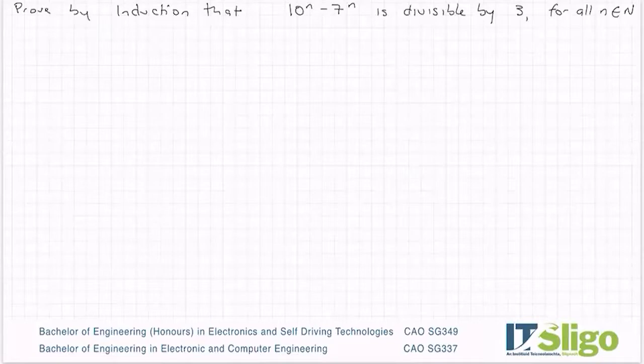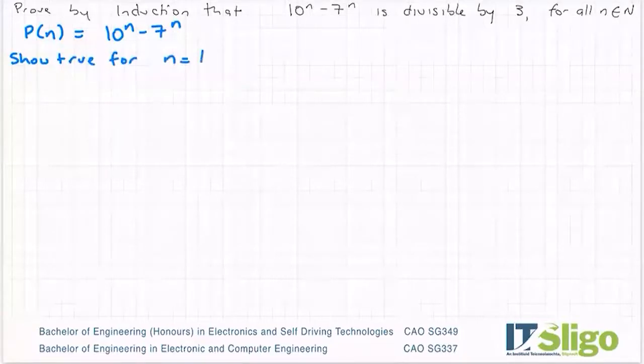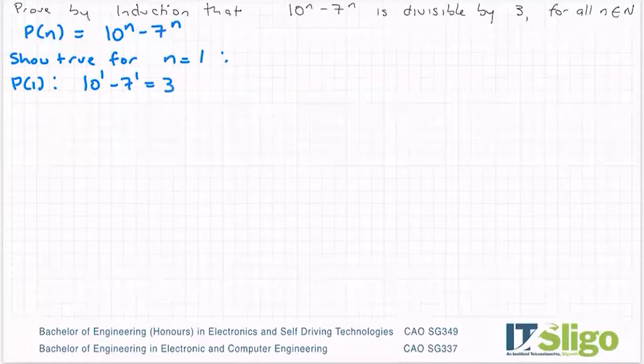So divisibility problem. Our expression p of n is 10 to the power of n minus 7 to the power of n. We want to show true for n equals 1. So my p of 1 would become 10 to the power of 1 minus 7 to the power of 1, which is 3 and that is divisible by 3. So we've shown true for n equals 1.